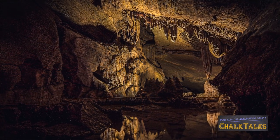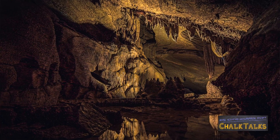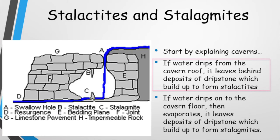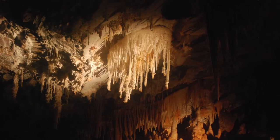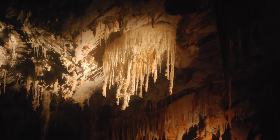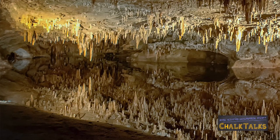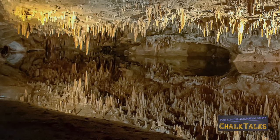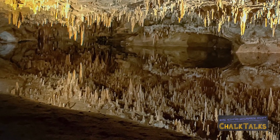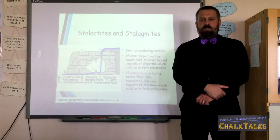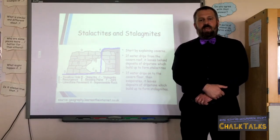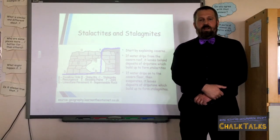Water dripping from the roof of a cavern can sometimes leave behind deposits of dissolved limestone, which is called dripstone. Over time, this can build up into long spikes extending downwards from the roof of the cavern, which are called stalactites. Sometimes the water containing the dripstone falls onto the cavern floor and then the water evaporates, leaving behind the dripstone deposits, which can build up into spikes extending upwards from the bottom of the cave, which we call stalagmites. These stalagmites only grow at a rate of a few millimetres per year because the water contains relatively small amounts of dripstone and because the air temperature in the caves is so low that evaporation happens at a very low rate.